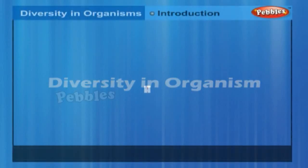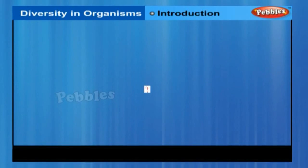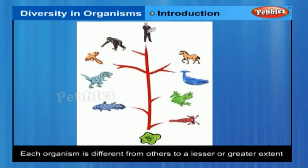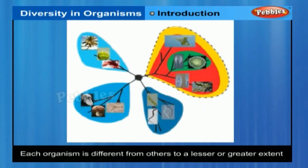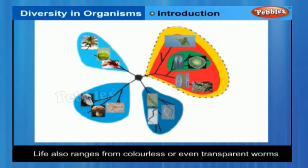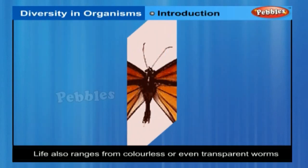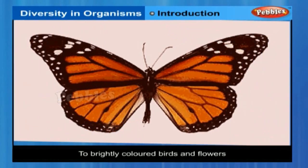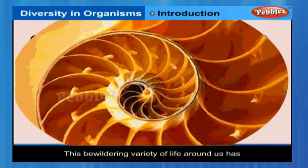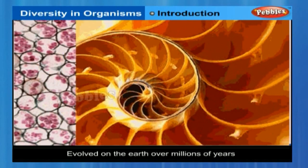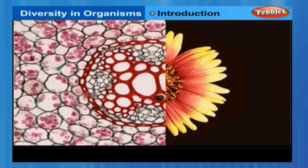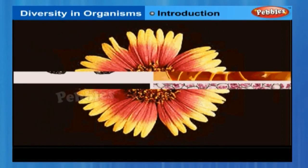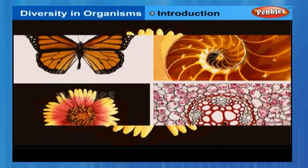Have you ever thought of the multitude of life forms that surround us? Each organism is different from all others to a lesser or greater extent. Life also ranges from colourless or even transparent worms to brightly coloured birds and flowers. This bewildering variety of life around us has evolved on the earth over millions of years. We look for similarities among the organisms which allow us to put them into different classes and then study different classes or groups as a whole.